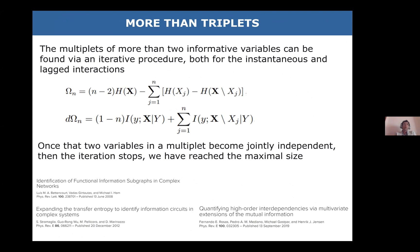So far we have only explored triplets. What if we want more than triplets? Of course, we quickly incur the curse of dimensionality. Starting from work by Betancourt et al. in Physical Review Letters 2018, which expanded mutual information as if it were a Taylor series, we tried to introduce a conditioning operator and expand the transfer entropy — which worked reasonably well, but for actual systems with many variables and short time points, it doesn't scale very well.